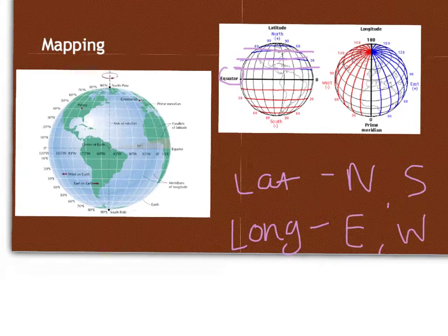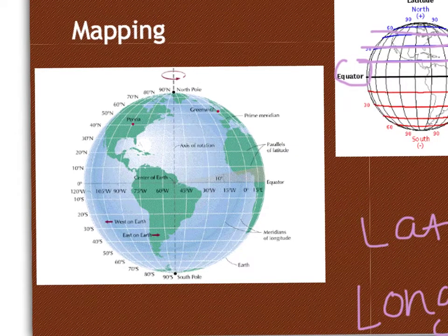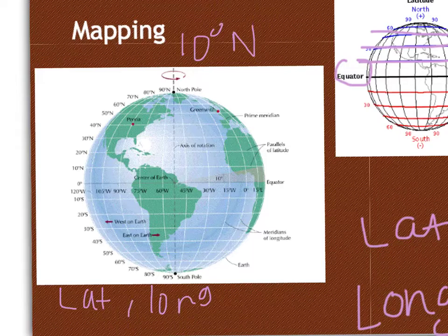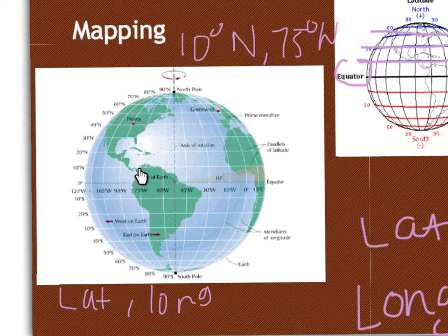So when we're looking at this map of the world, and someone gives you coordinates, they're always going to give you latitude first and then longitude. So if I said, what's 10 degrees north and 75 degrees west, that would lead you to 10 degrees north, and now we're going 75 degrees west. So right here in South America.